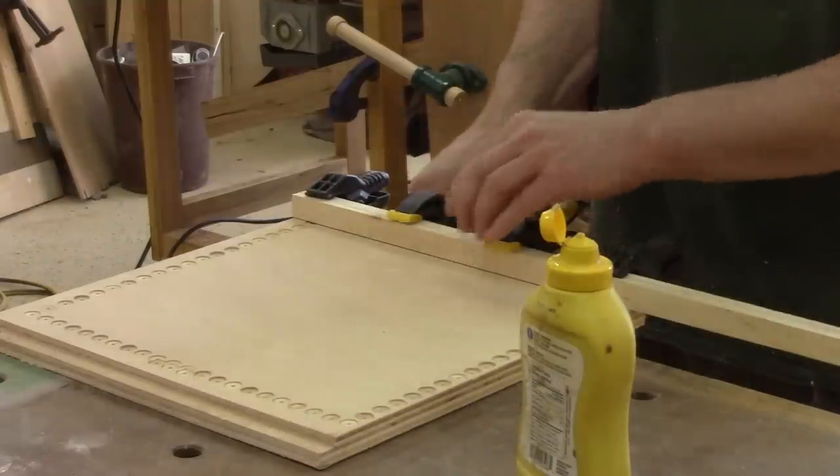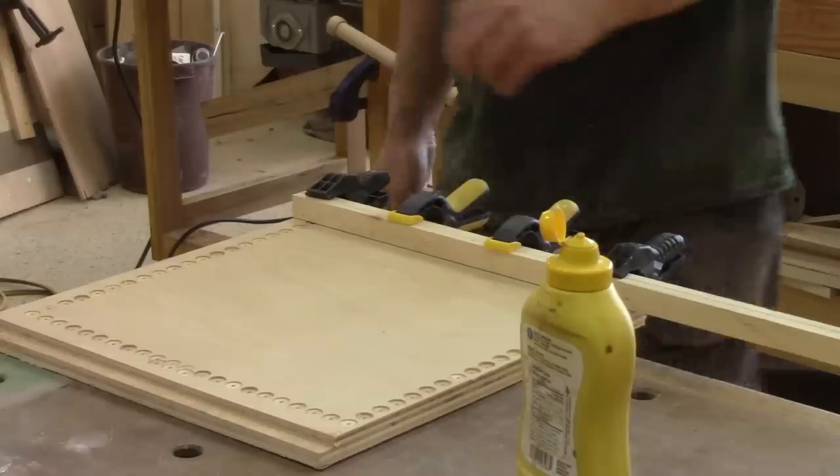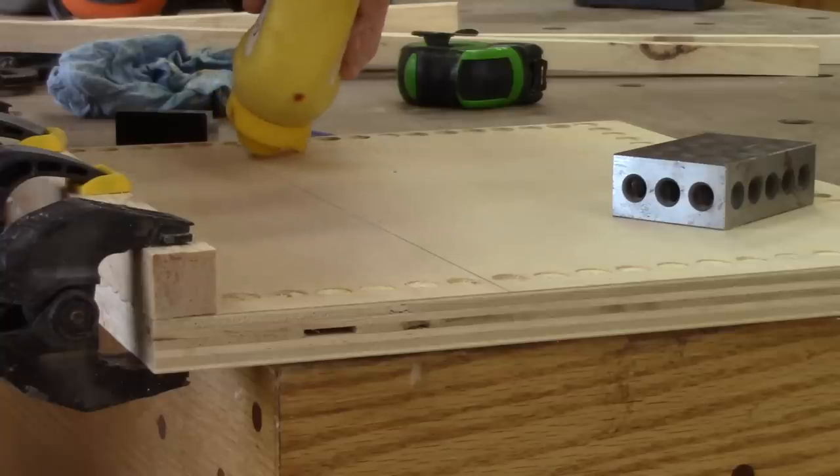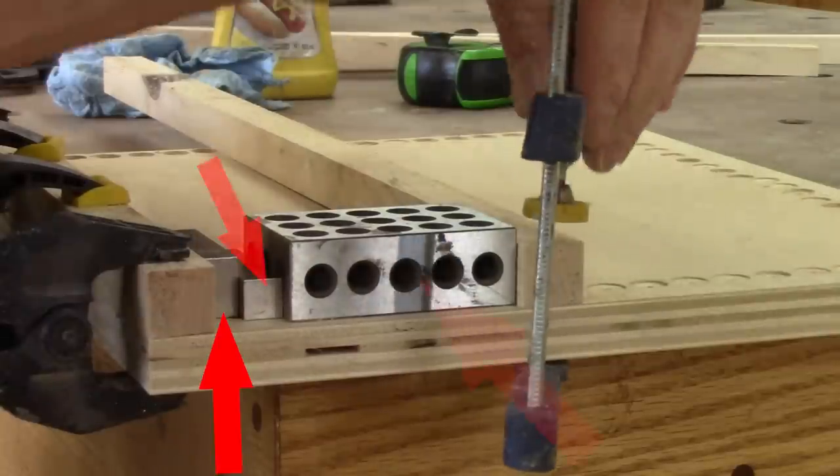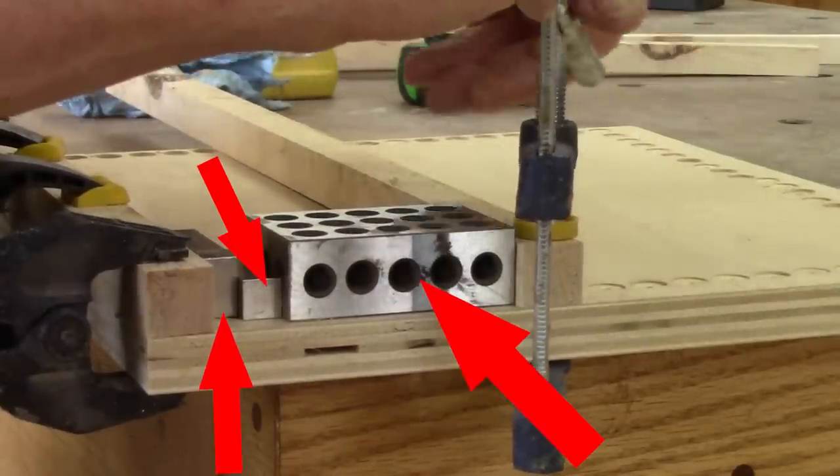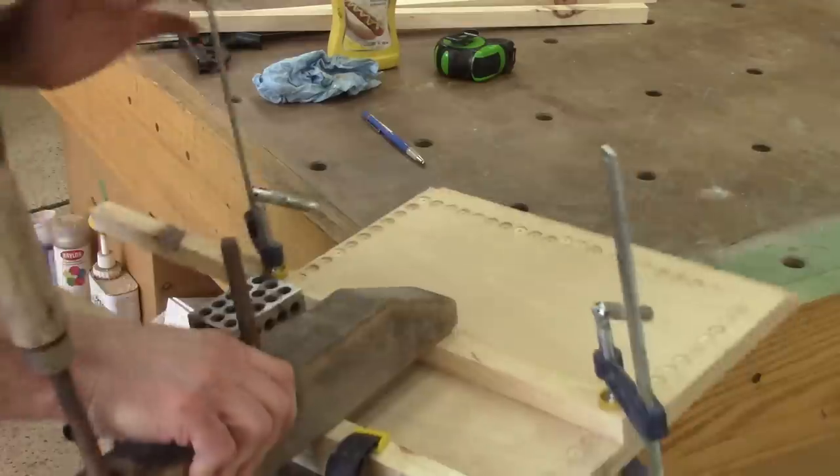I didn't make a plan for this project, so I'm making it along the way. After gluing a strip on one side of my jig, I glue the second strip using setup blocks. Now I need to wait for the glue to dry.